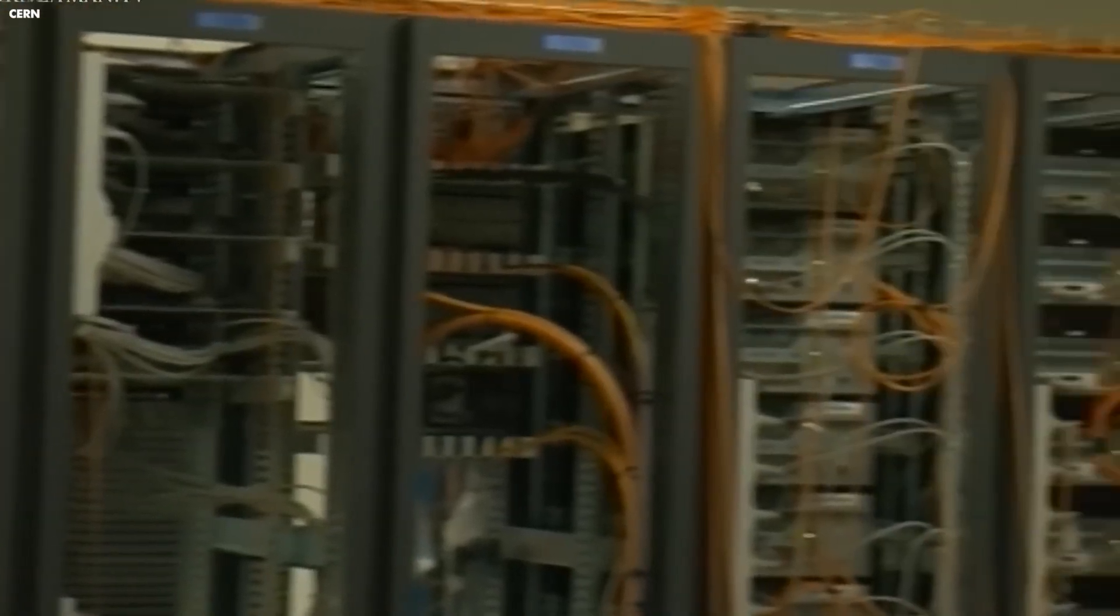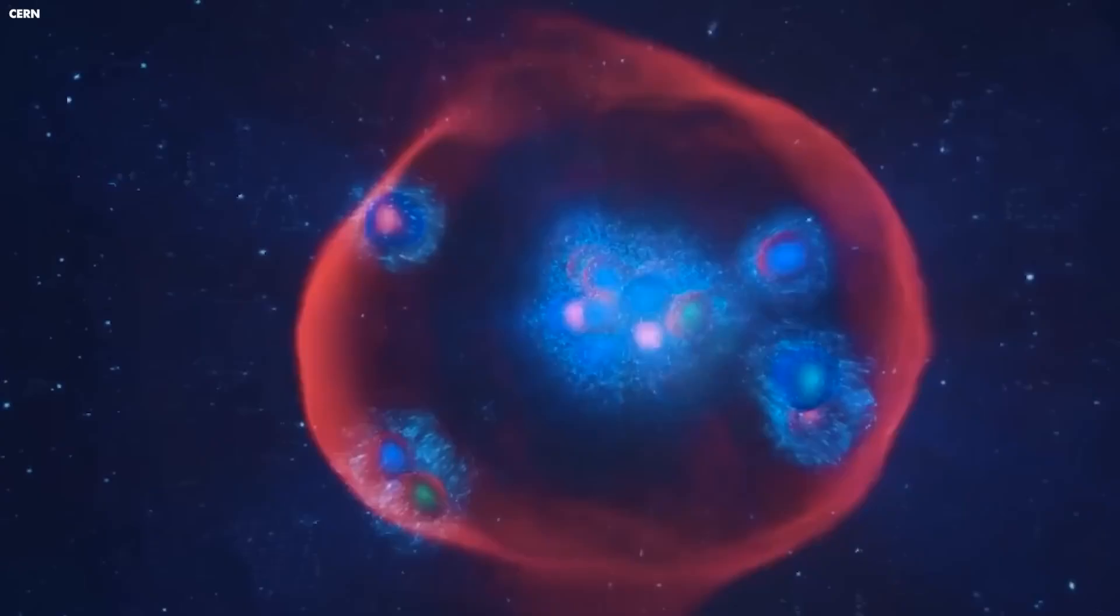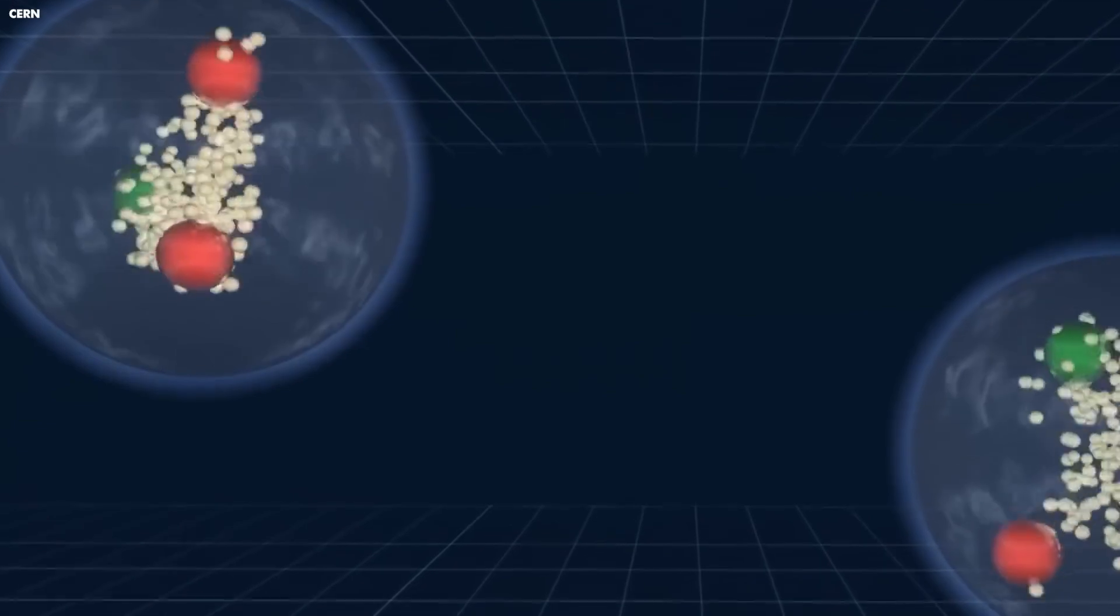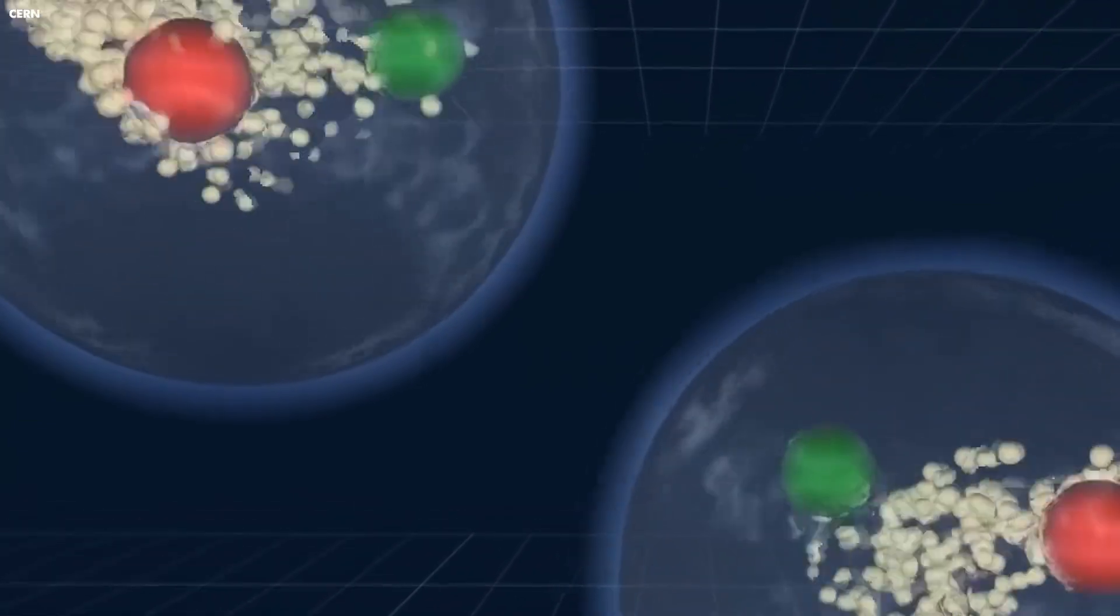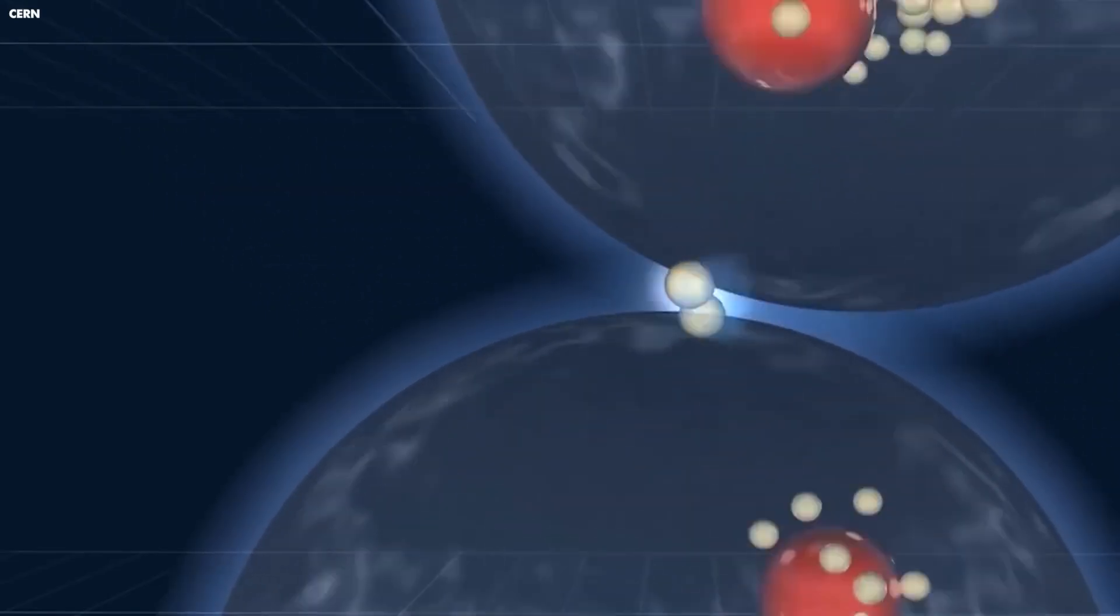Proton beams are guided along the ring by superconducting electromagnets, a task described by CERN as like shooting two needles 10 kilometers apart with such precision that they meet halfway, in the same month the electromagnets were finally connected. Electromagnets are chilled to a temperature below that of space by using liquid helium, allowing them to accelerate particle beams to nearly light speed.